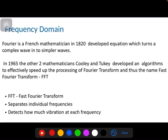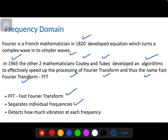There was a scientist called Fourier, a French mathematician. Around 1820 he developed an equation which turns a complex wave into simpler waves. In 1965, as a further development, mathematicians Cooley and Tukey developed mathematical algorithms that effectively speed up the processing of the Fourier Transform. So we now call it the Fast Fourier Transform. The FFT separates the individual frequencies, converting the complex wave into simpler waves, and detects how much vibration exists at each frequency.